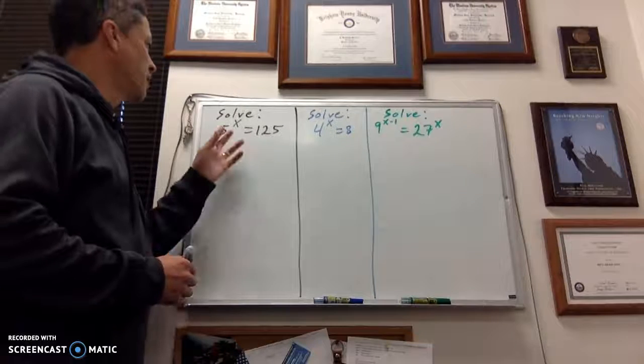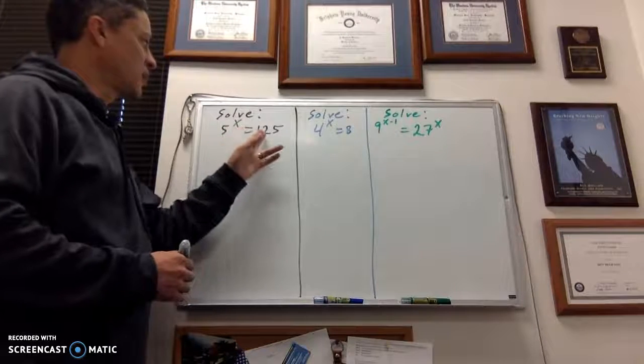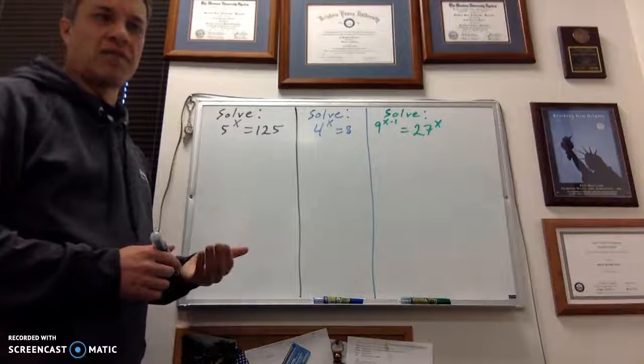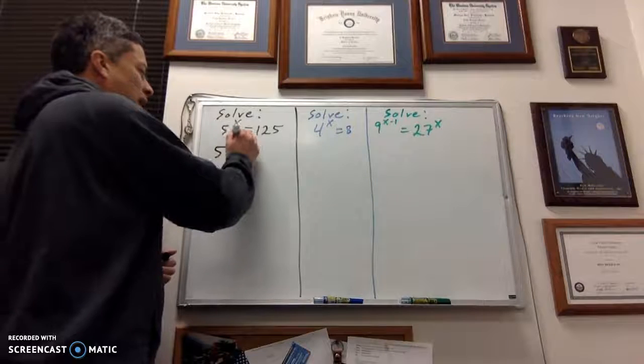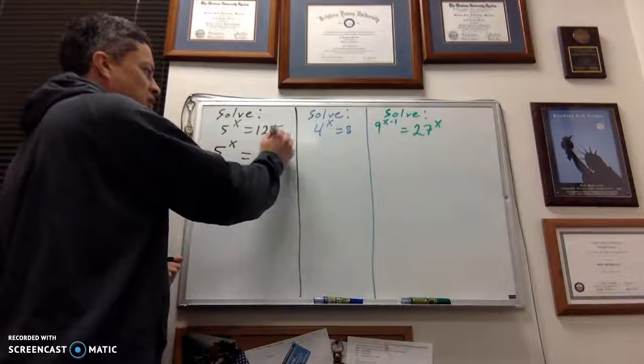Let's look at this one for example. We're going to solve 5 to the x equaling 125. Well, 125 is the same thing as 5 cubed. So I'm going to rewrite that 125 so that it is 5 cubed.